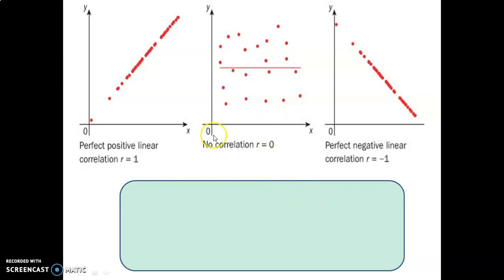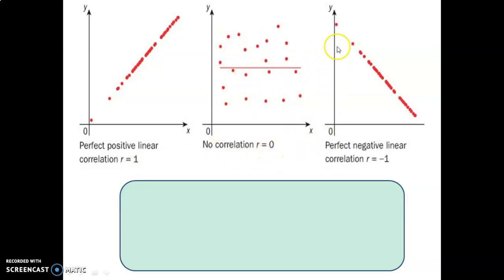Here are some visuals of that. We have this scatter data which looks like it follows a perfect linear trend — therefore, perfect positive correlation, r equals 1. Here the scatterplot shows no trend, no correlation, r equals 0. And here we see a perfect negative correlation, r equals negative 1. It's negative because as the independent variables increase, the dependent variables decrease.